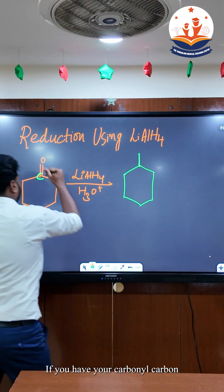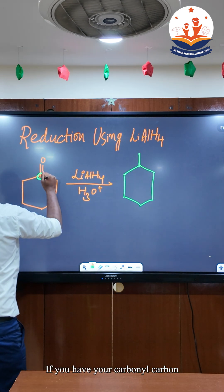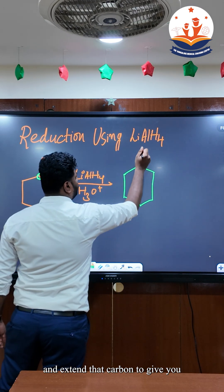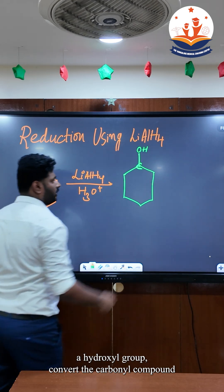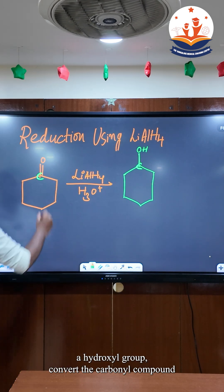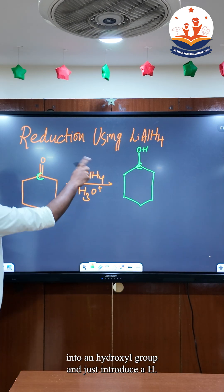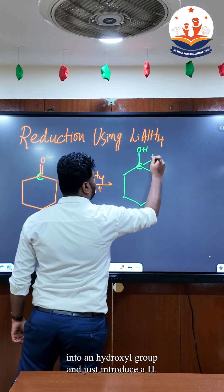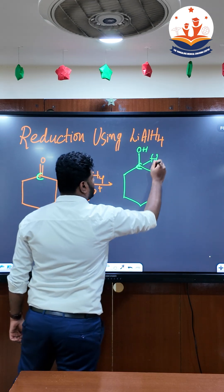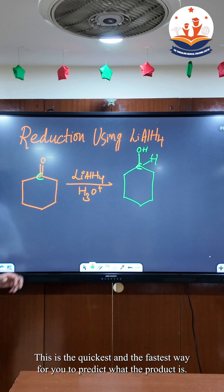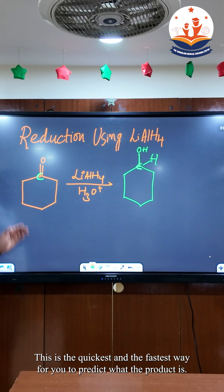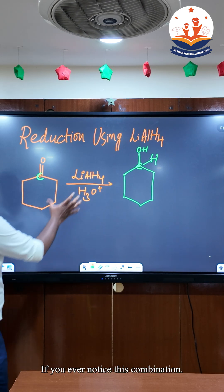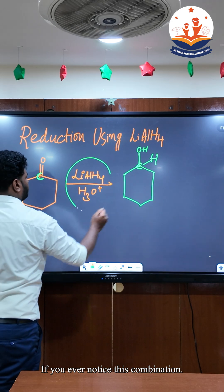Take your carbonyl carbon and extend that carbon to give you a hydroxyl group. Convert the carbonyl compound into a hydroxyl group and just introduce a hydrogen. This is the quickest and fastest way for you to predict what the product is when you notice this combination.